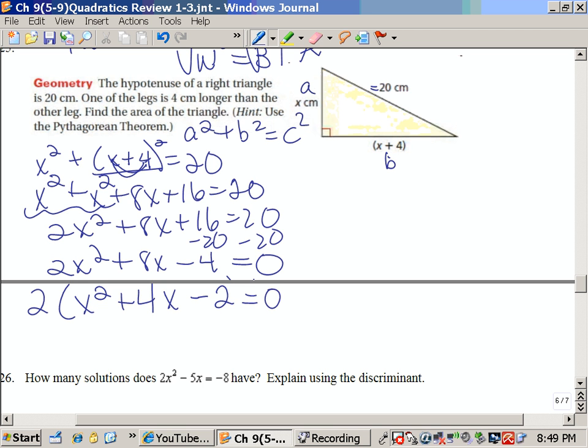Now I'd like to factor that, that seems to be the easiest way. However, I can't think of anything that will multiply to give me 2 and add to give me 4. I could do complete the square or the quadratic formula. For this time, I'm just going to complete the square.